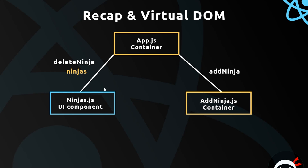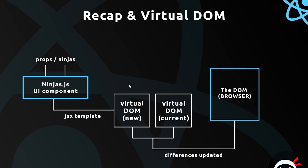But how is all this updating working behind the scenes? Well, that's down to the virtual DOM. We have our ninjas component constantly updating because we're constantly receiving different versions of the props when ninjas are removed or added to the state of the root component. Every time we get those new props we want to update the JSX template dependent on that data so we can output it to the browser. Every time we get an update, we take that updated JSX template and React makes a virtual DOM out of it, which is a JavaScript representation of the template.